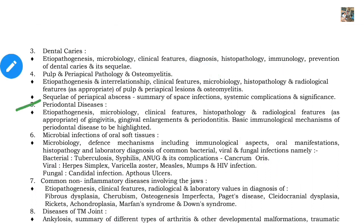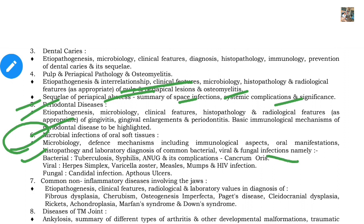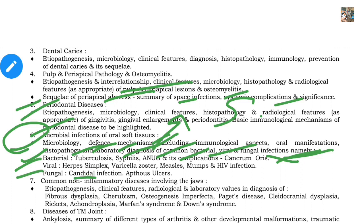The next question covers diseases of the periodontal ligament — most important is periodontitis. Its etiopathogenesis, microbiology, clinical features, histology, and radiographic features all need to be studied. Then microbial infections: bacterial — tuberculosis, syphilis, ANUG (acute necrotizing ulcerative gingivitis), and cancrum oris — both very important in general surgery also. Viral — herpes simplex, varicella zoster, measles, mumps, and HIV infection. Fungal — candidal infection, which carries a 5-mark question, and you also need to mention its types.